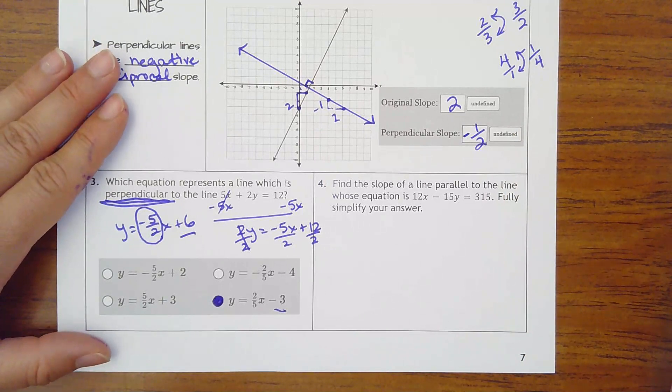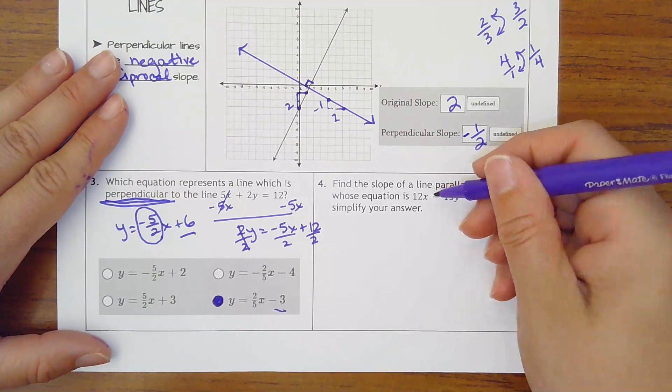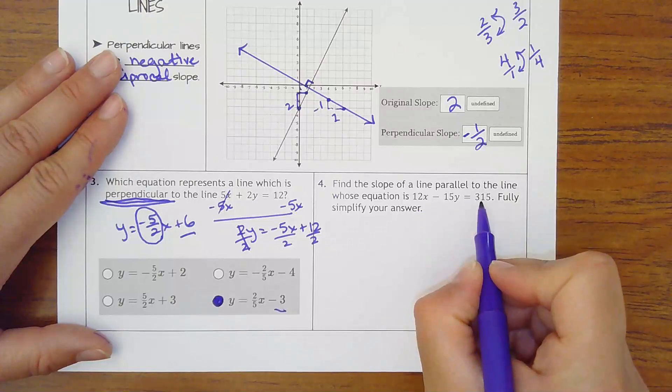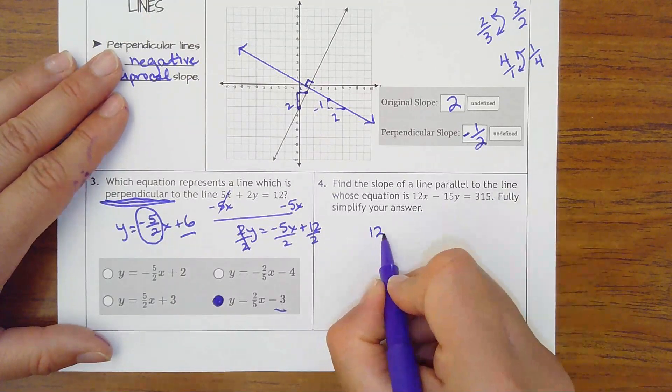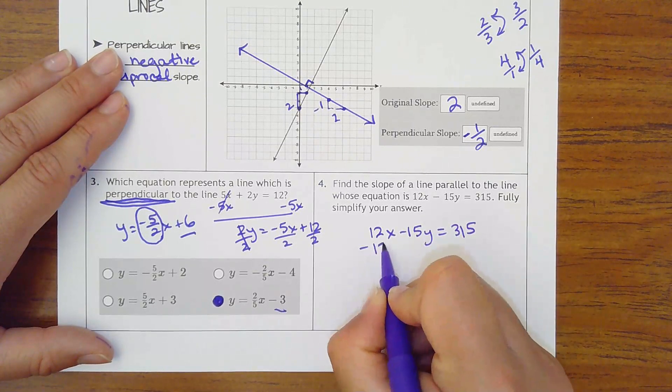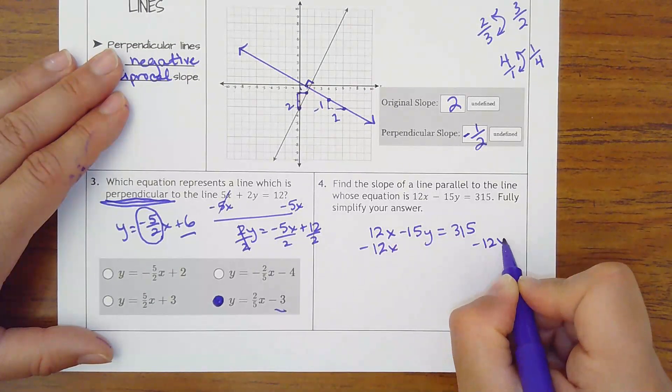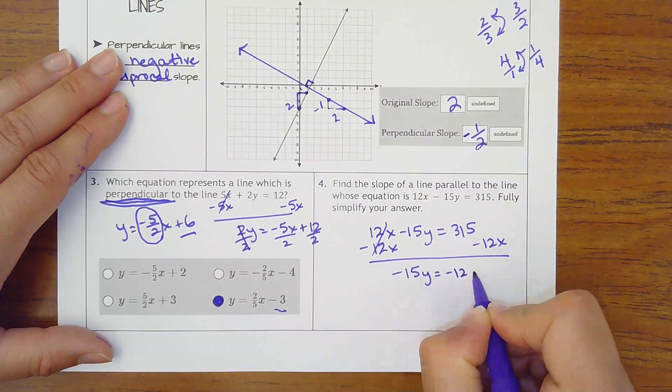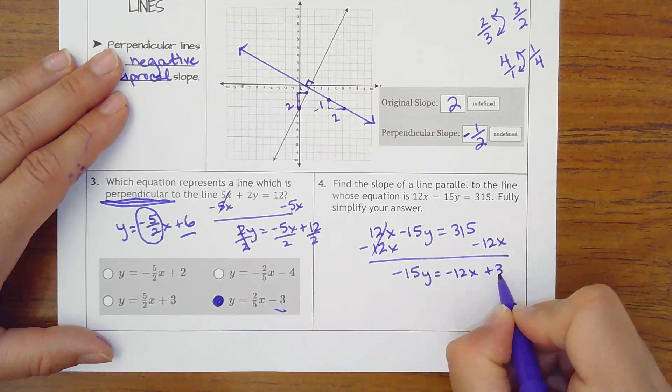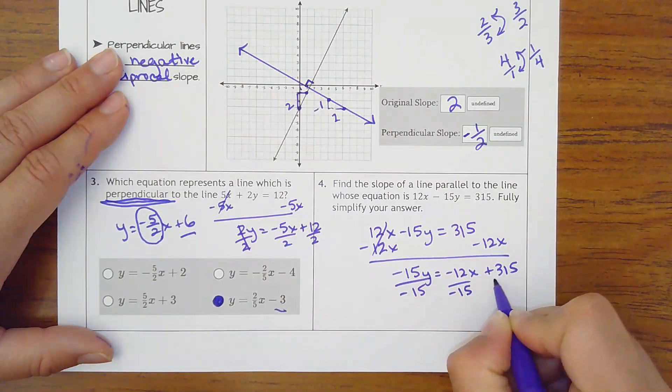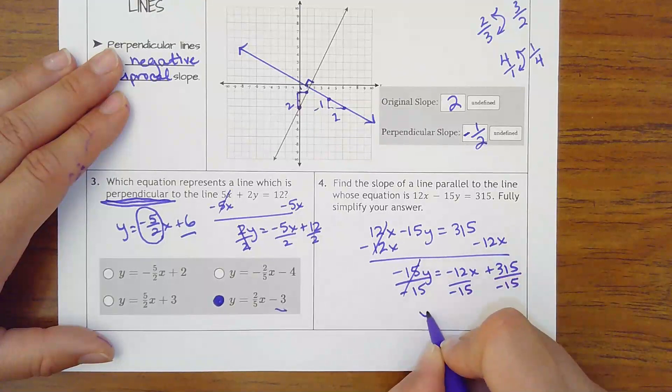Find the slope of a line parallel to the line whose equation is this. Fully simplify your answer. So again, this is in standard form. We need to get it into slope intercept form so we can see the slope. So I'm going to subtract my 12x over. Divide everything by negative 15.